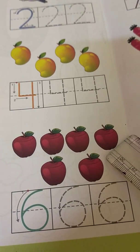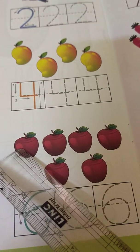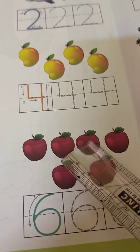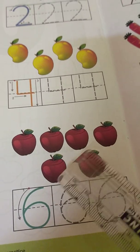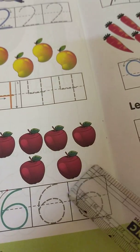How many apples are there? Count. One, two, three, four, five, six. So we write over here, six.